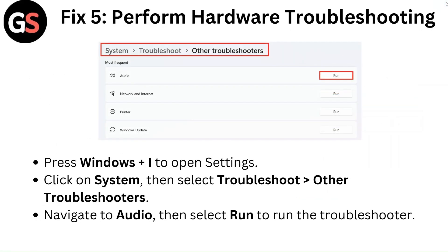Fix 5: Perform hardware troubleshooting. Press Windows plus I to open Settings. Click on System, then select Troubleshoot, then Other Troubleshooters. Navigate to Audio, then select Run to run the troubleshooter.